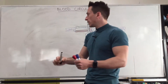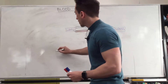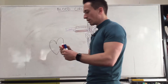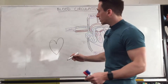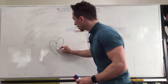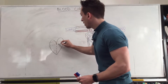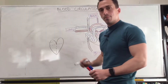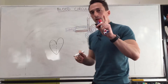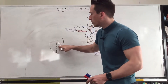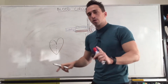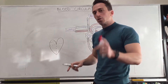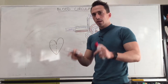First thing you need to do is simply draw up a picture of the heart that you would probably see in a cartoon — that cartoonish heart. Now all you need to do is separate that into quadrants, four different areas: two at the top and two down the bottom. The two up the top are called atria and the two down the bottom are called ventricles. That's the first point.